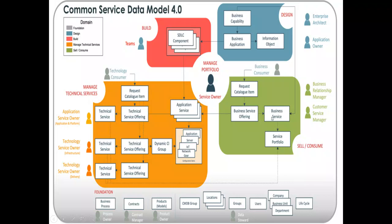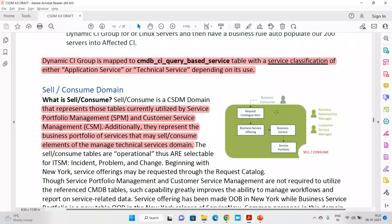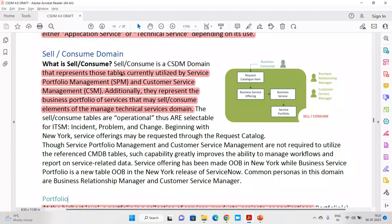Every business service has a service offering — the concept of offering is same here as well. Sell and Consume is a CSM domain that represents the tables currently utilized by SPM and customer service. This means it's available for business users or business consumers, representing the business portfolio — what you are selling. Take any large MNC: they have many things in the portfolio — support, maintenance, development, implementation, release, deployments, consulting, vendor, resourcing. These are their services available in the market, both operational and selectable on incident, problem, and change.